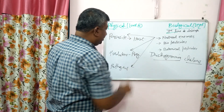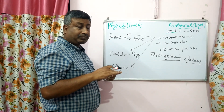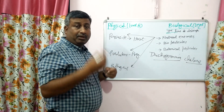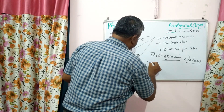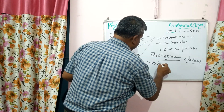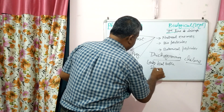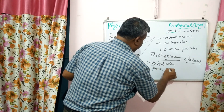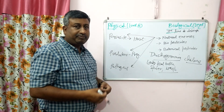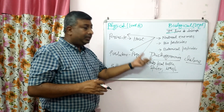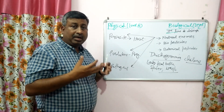Predators kill the prey and use the whole insect as food, thus reducing the insect population. Natural predators present in the field include the ladybird beetle, some bugs, spiders, and wasps. We should try to maintain the population of spiders and wasps and not kill them, because they control insects by eating them. This is the predator-prey relationship.